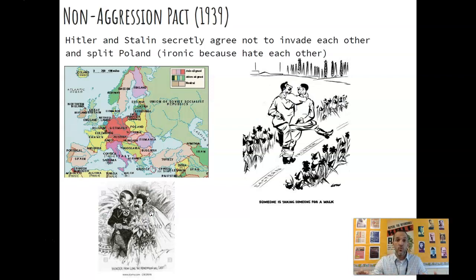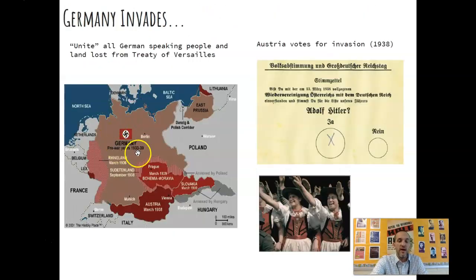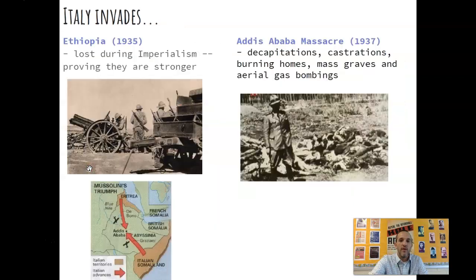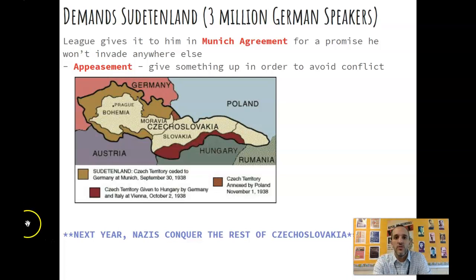This is the buildup to the war. What actually leads to World War II starting is the invasion of Poland, when Britain, France, and the League of Nations say they can't let this keep happening. But by 1939, Hitler and the Nazi party have expanded significantly over a six-year period. We also have Italy on the prowl and Japan invading in the east. It all leads to this buildup that eventually becomes World War II.